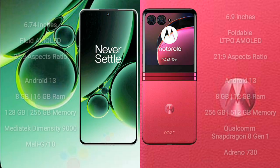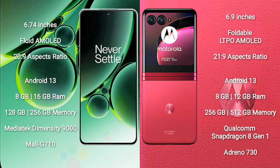OnePlus Nord 3 comes with a 6.74-inch flat AMOLED display and an aspect ratio of 20:9. Motorola Razr 40 Ultra has a 6.9-inch foldable LTPO AMOLED display with an aspect ratio of 21:9.